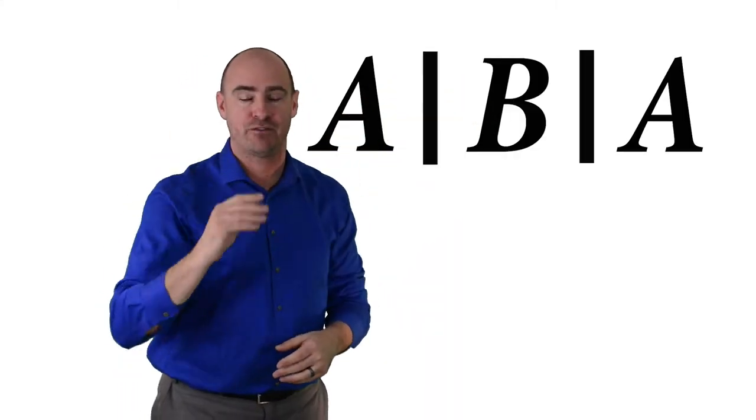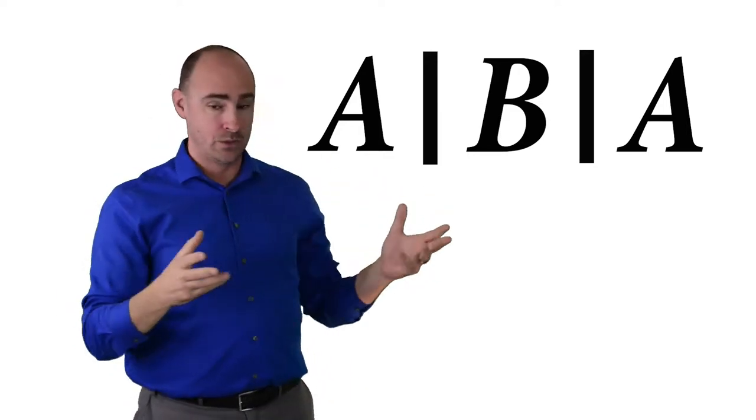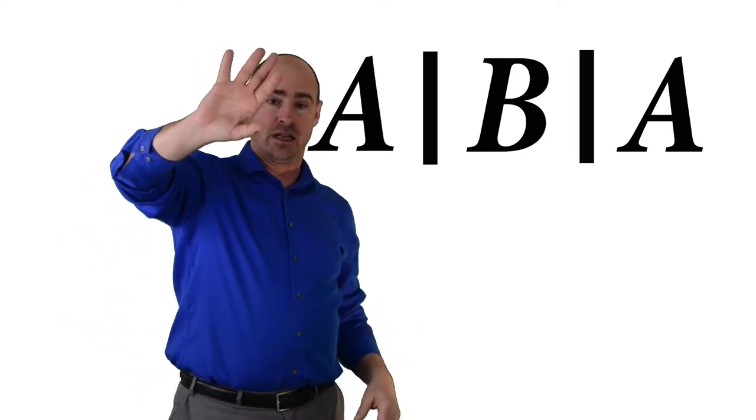Let's just do a little ABA design. So ABA, right? Three conditions for our phase changes. So we have our phase changes in here. We get our A's, which is our baseline. Then we're going to do our intervention. And then we're going to go back to baseline.